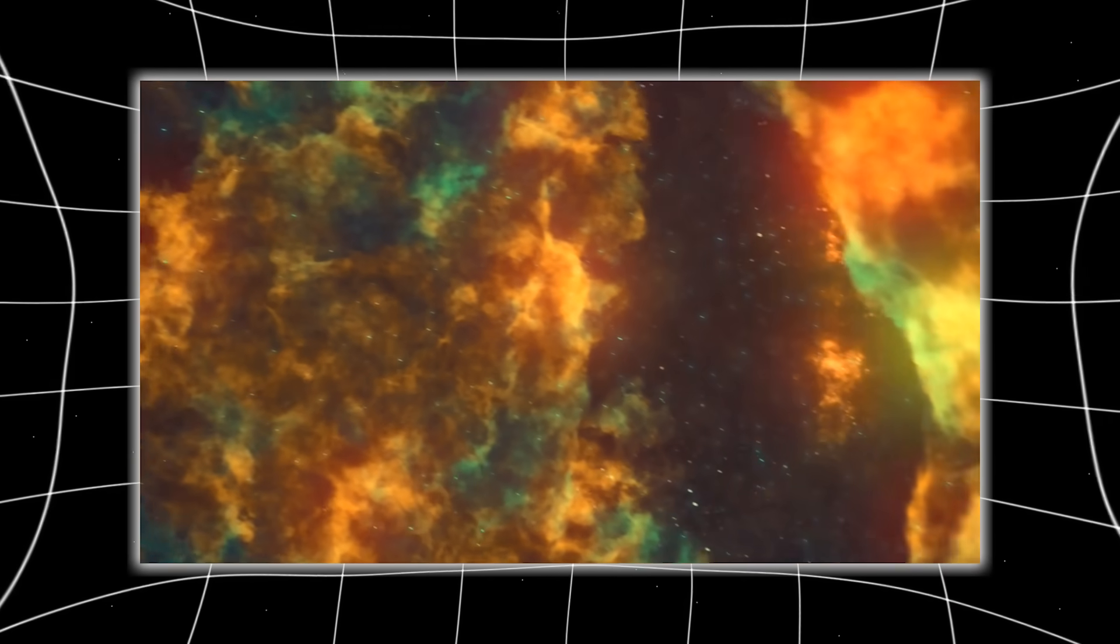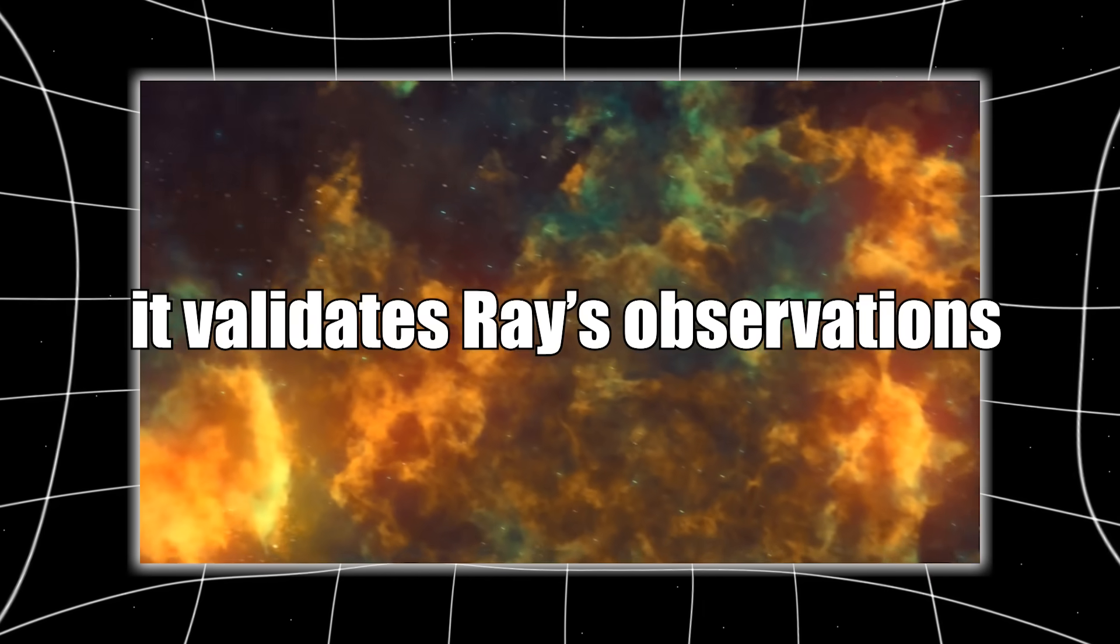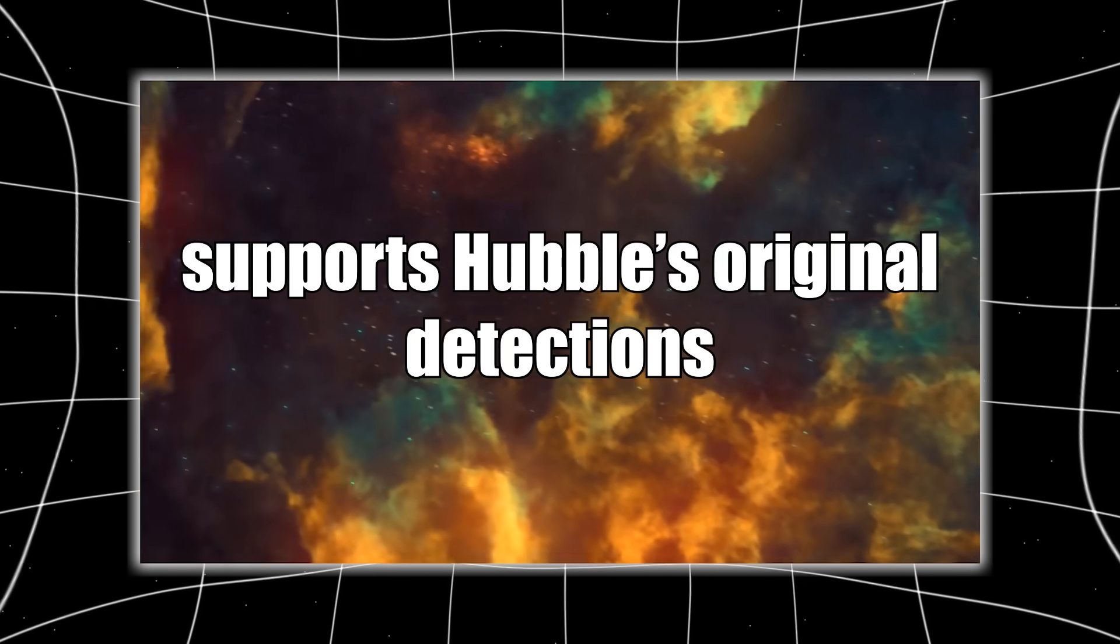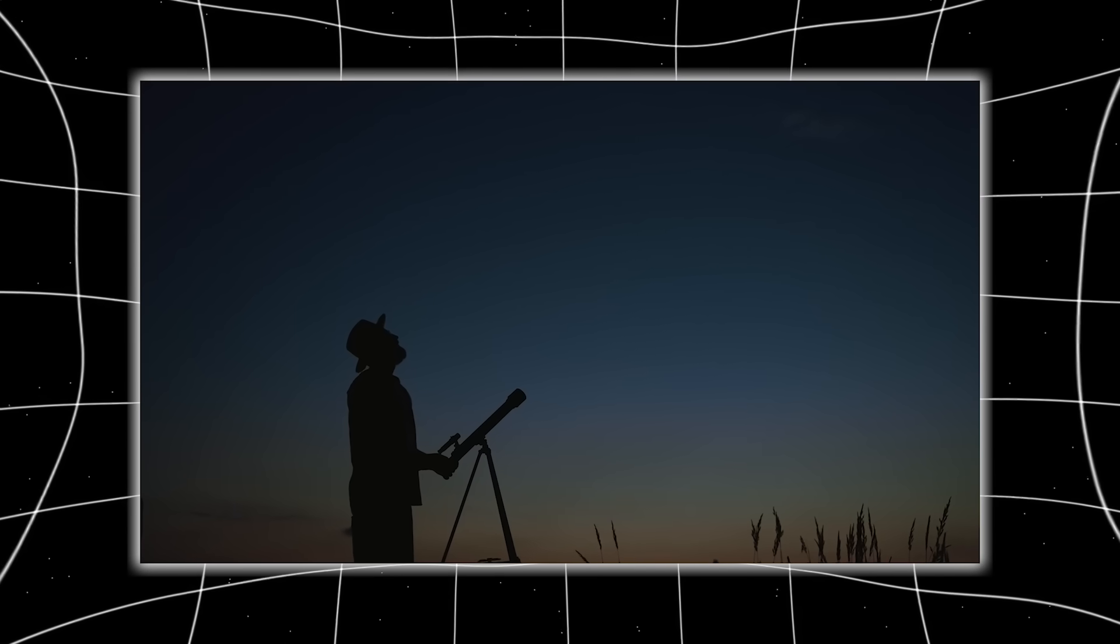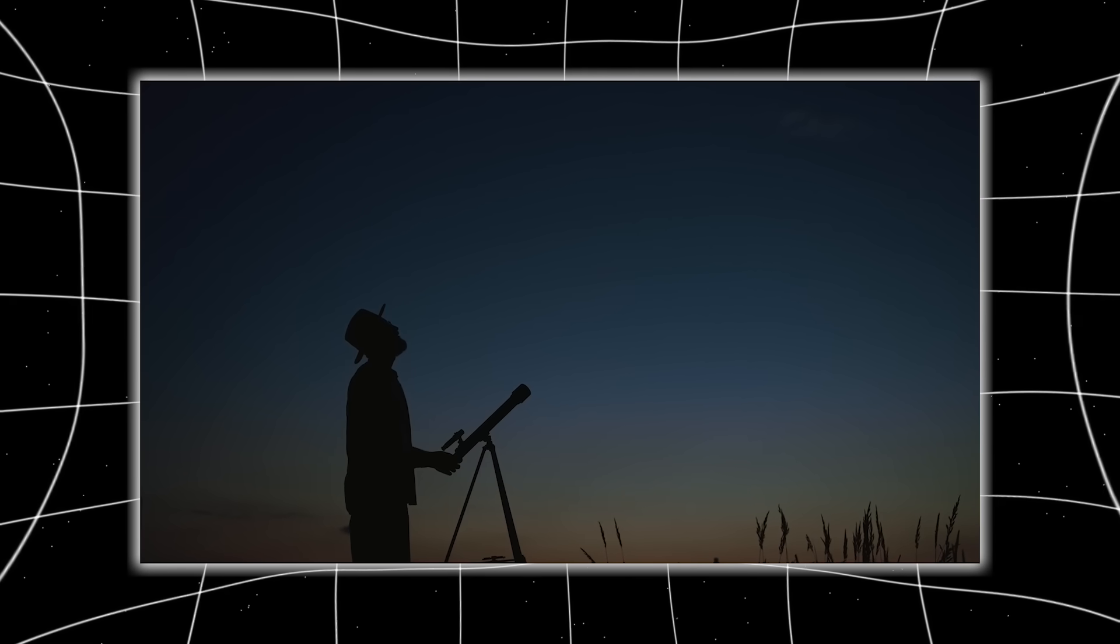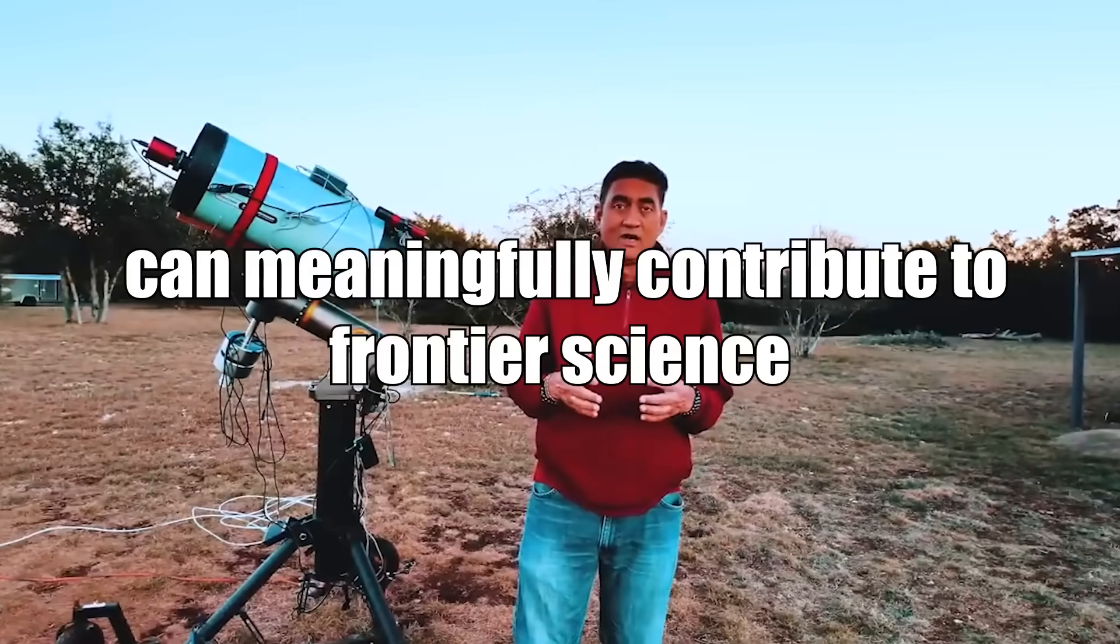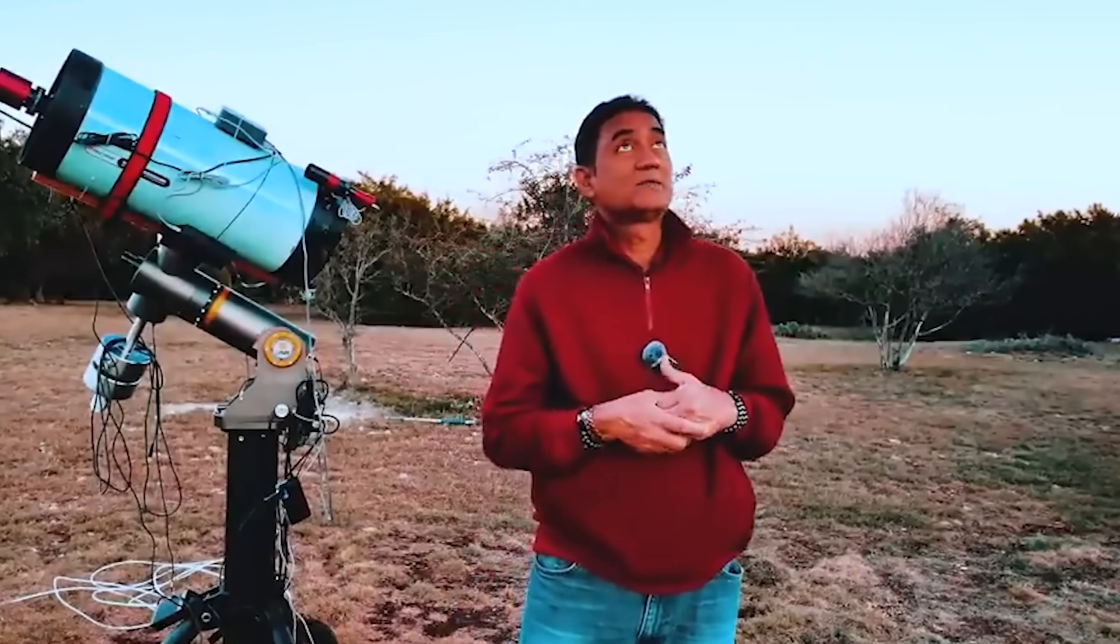Ray compares his processed images with archived Hubble data, and the pointed structure appears in both. This is remarkable for several reasons. It validates Ray's observations, supports Hubble's original detections, and demonstrates that independent observers, with modest telescopes, can meaningfully contribute to frontier science. Ray's work is not guesswork. It's data.